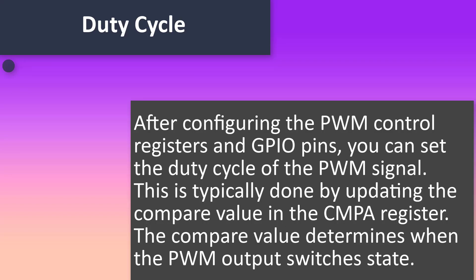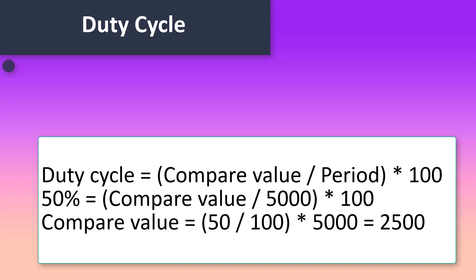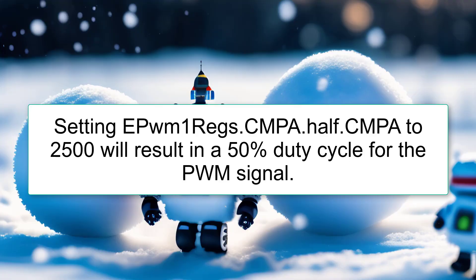Duty Cycle. After configuring the PWM control registers and GPIO pins, you can set the duty cycle of the PWM signal. This is typically done by updating the compare value in the CMPA register. The compare value determines when the PWM output switches state. To set a duty cycle of 50% with a period of 5000, calculate the compare value as: Duty Cycle = (compare value / period) * 100, so 50% = (compare value / 5000) * 100, giving a compare value of 2500. Setting EPWM1regs.CMPA.Half.CMPA to 2500 will result in a 50% duty cycle for the PWM signal.